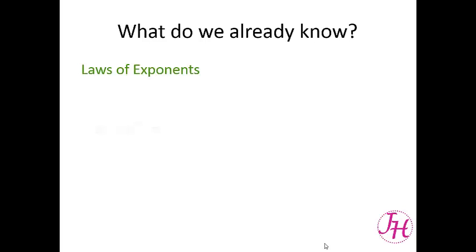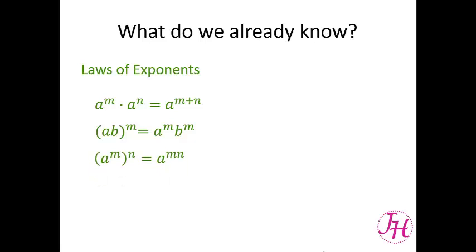We already know our laws of exponents. Remember that a to the m times a to the n is equal to a to the m plus n. The quantity a b to the m is equal to a to the m times b to the m, and a to the m quantity to the n is equal to a to the mn. So if you have two of the same base, you add the exponents. If you have a set of parentheses, you distribute that outside exponent to each term inside the parentheses, or each variable. And if you have something to a power to another power, you multiply those exponents.